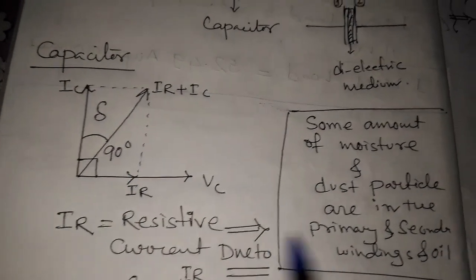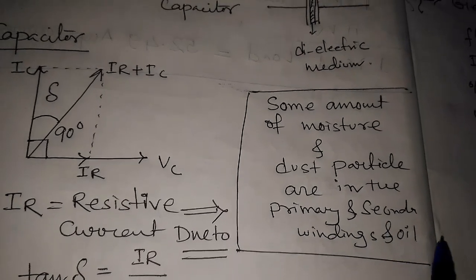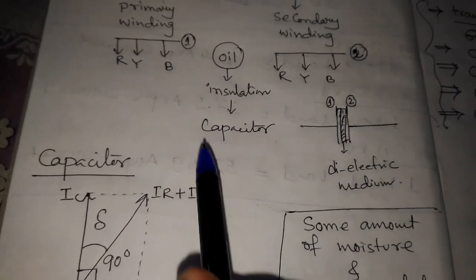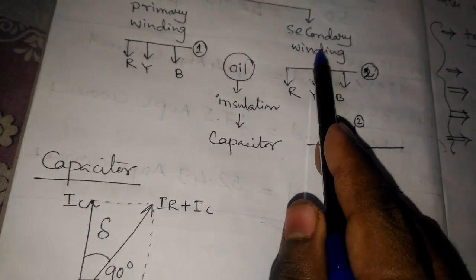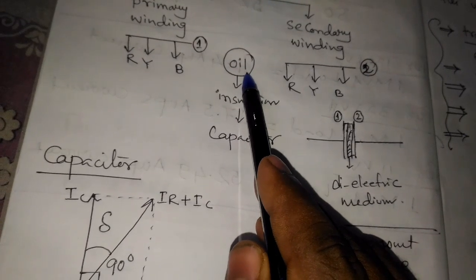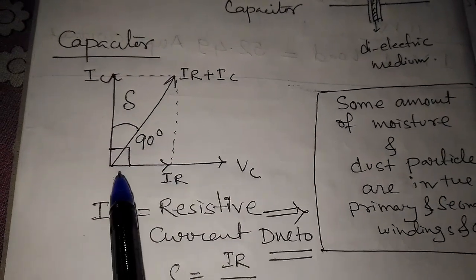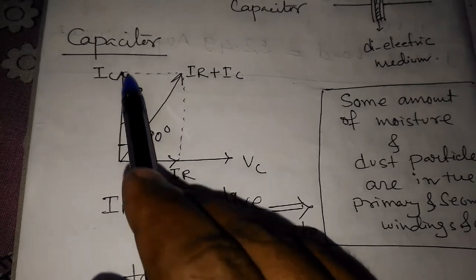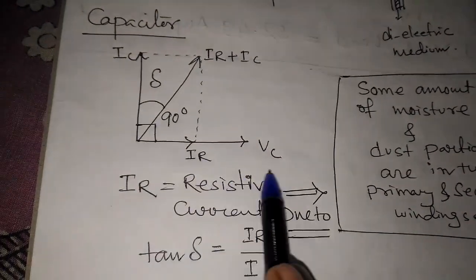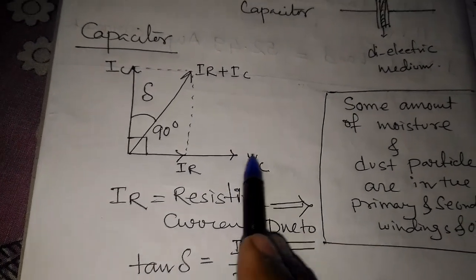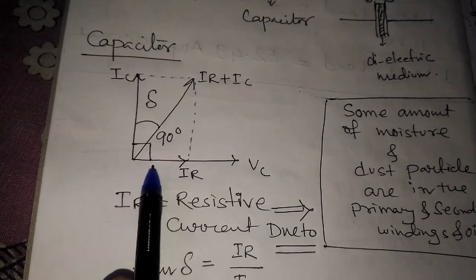If we discuss about the Tan Delta, some amount of moisture and dust particles are present in the primary and secondary winding and oil. These impurities — dust particles and moisture in the oil — deteriorate the insulation. In the phasor diagram, IC is the capacitive current and VC is the voltage applied to the capacitor. For a pure capacitor, the angle between IC and VC is 90 degrees.